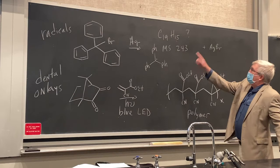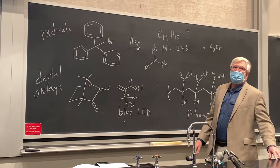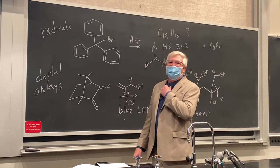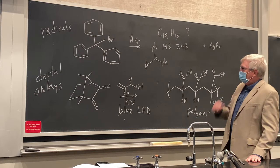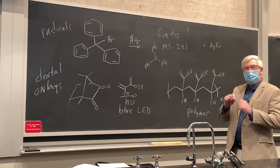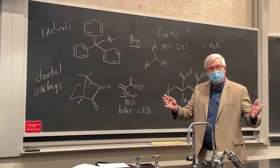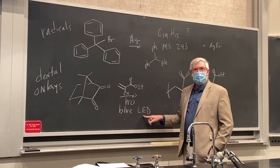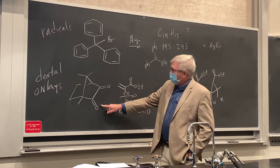We know many ways to make radicals now — carbon with odd electrons, seven electrons — and that's what we'll be talking about in Chapter 15. Now, how about dental onlays? We've all had cavities filled. Some of you have been very good brushing your teeth, but the rest of us have had to sit in the dental chair with the drill. Finally, they do the onlay with the polymer and composite materials. What's this blue LED light gun they put in there?